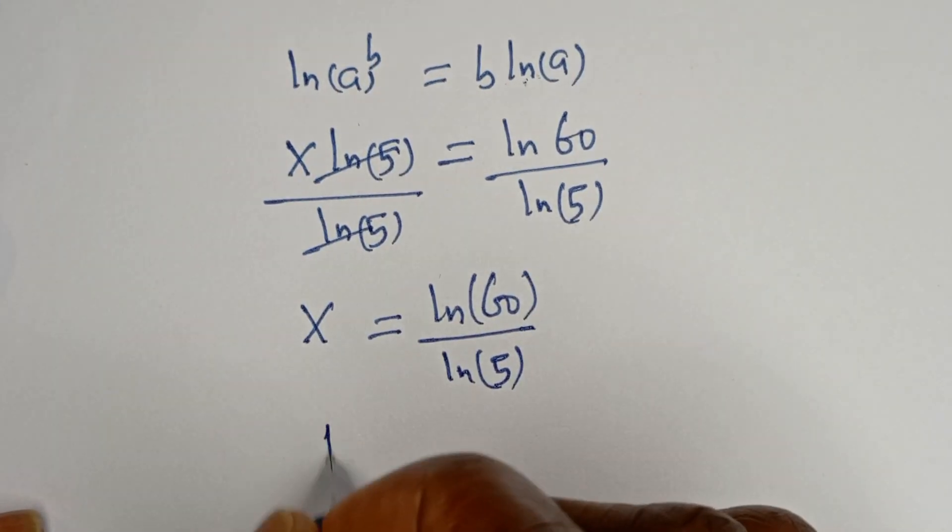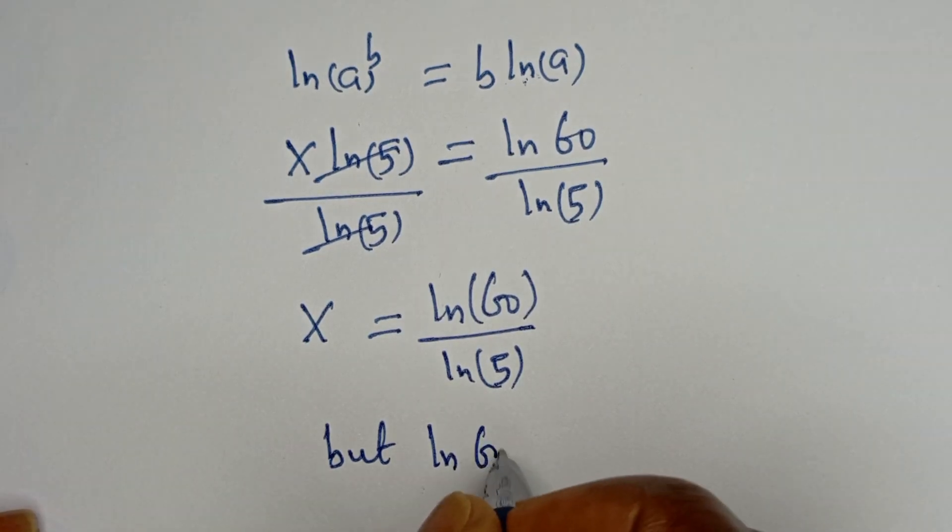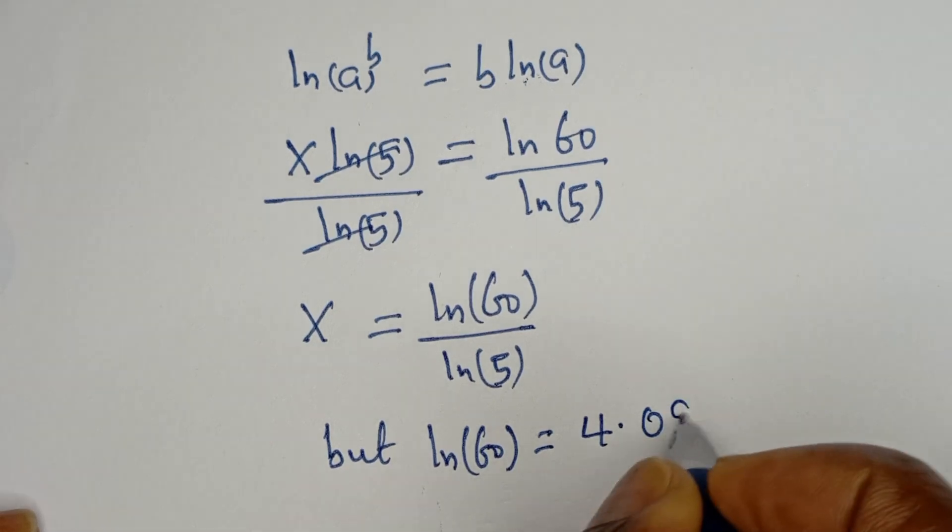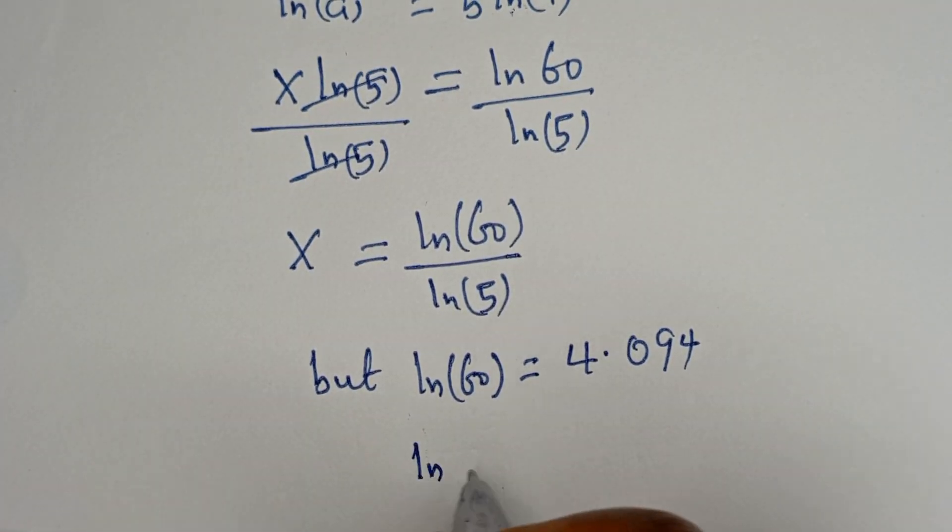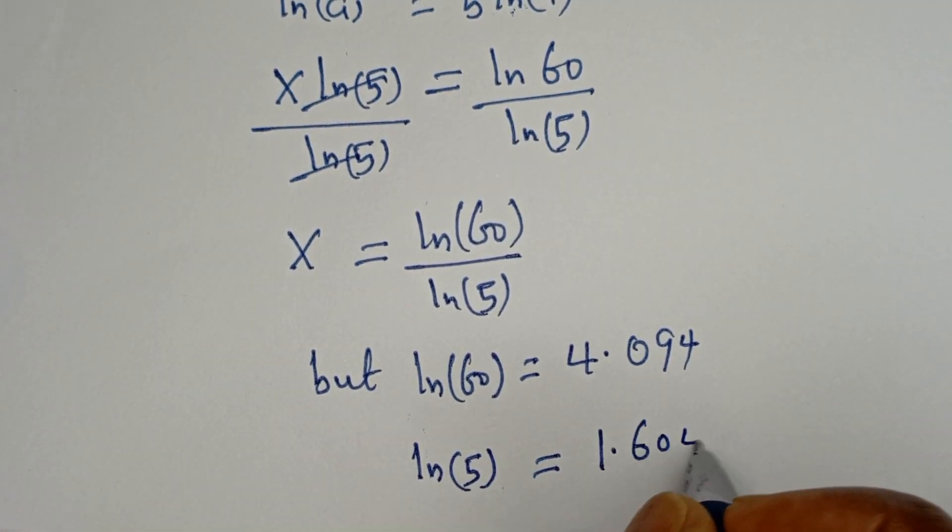But ln of 60 is equal to 4.094, and ln of 5 is equal to 1.604.